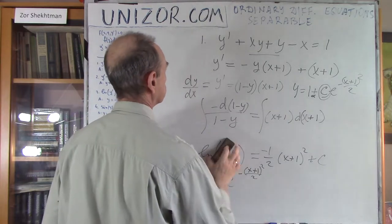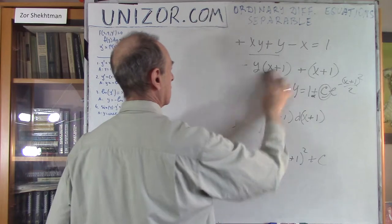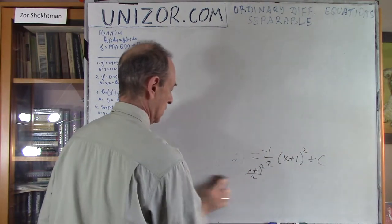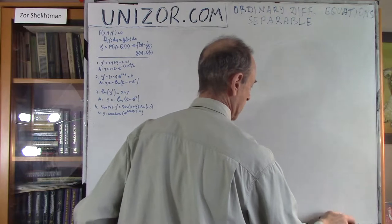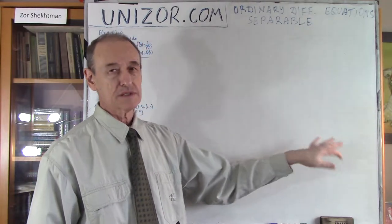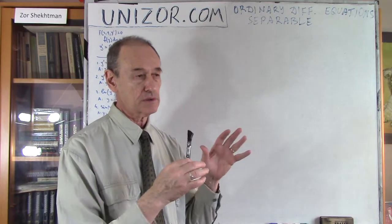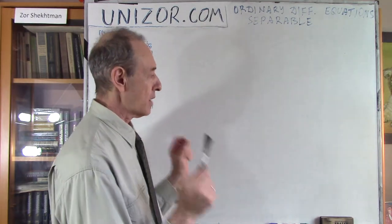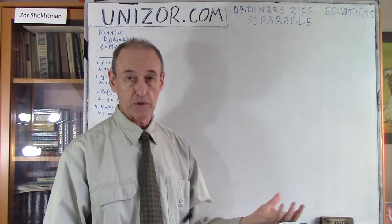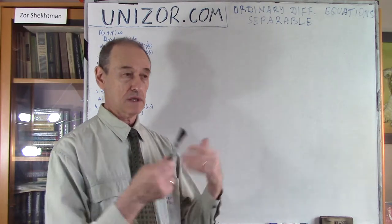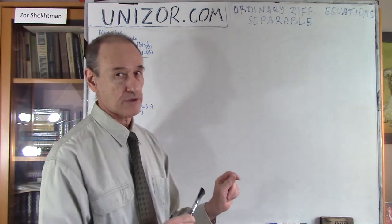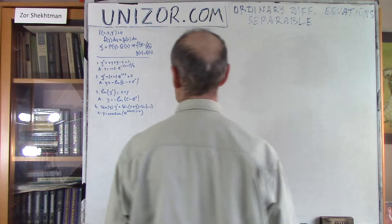I did shorthand certain pieces of this solution by not being very specific about the logarithm of the absolute value, or whether c should be positive or negative. These are technicalities I don't want to spend too much time on. My most important goal was to convert and transform the original equation into separable format, then separate y from x so I can integrate it.